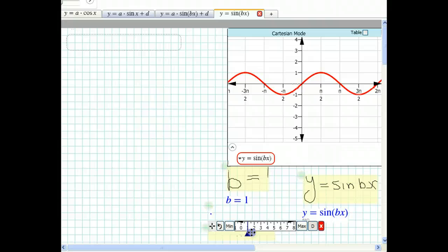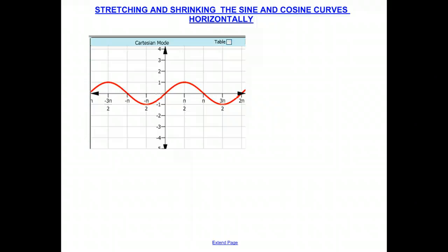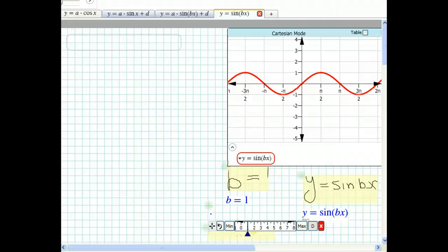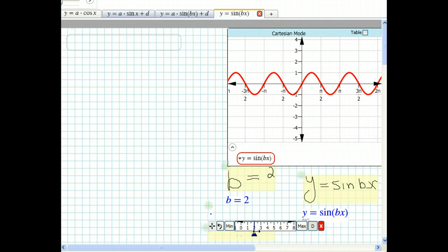Now let's look at the graph when B is equal to 2. Notice that the period of the original curve is 2 pi radians or 360 degrees, and one full cycle is completed in 360 degrees. Now B is 2 — let's see what happens to the graph.